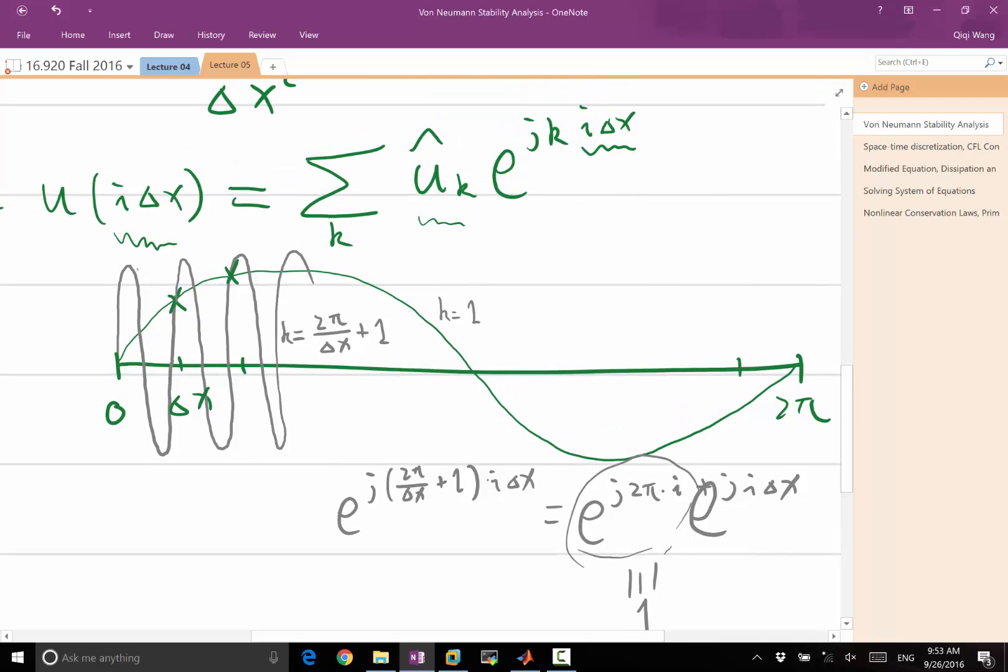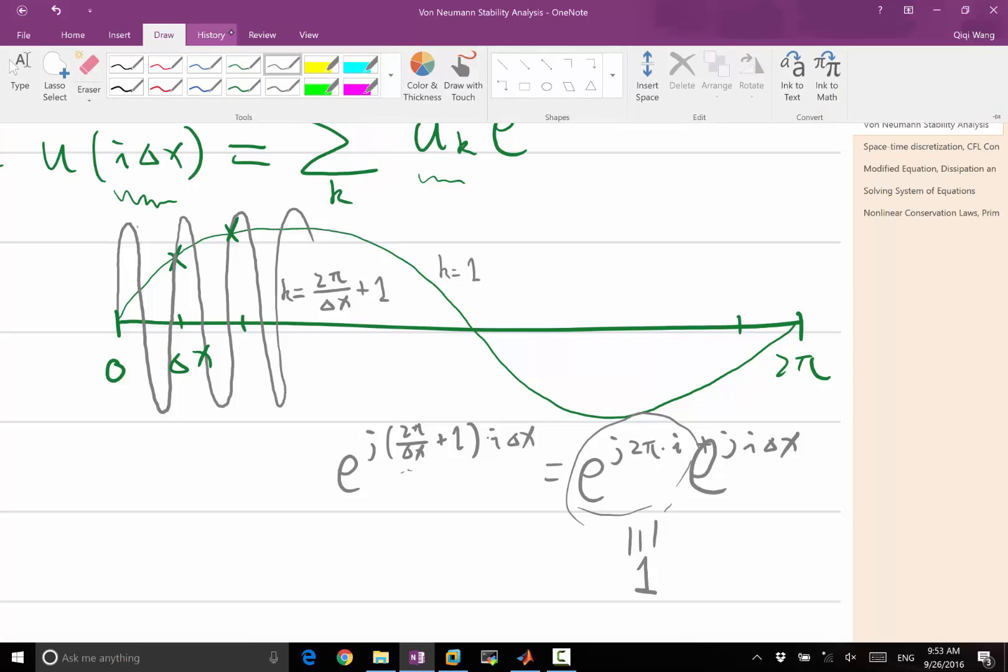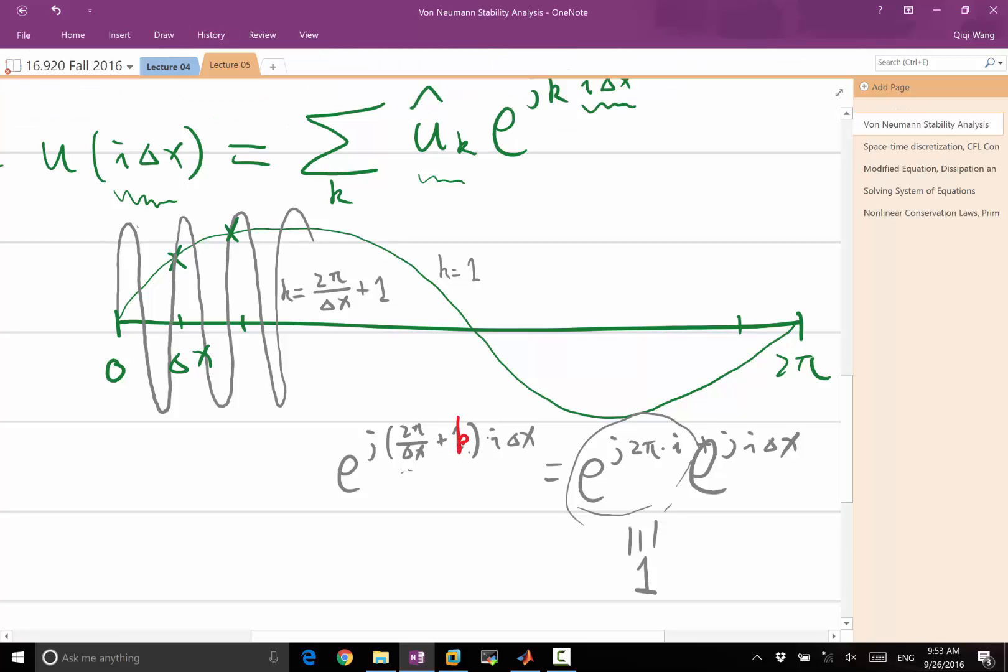So that means when I shift the frequency, and this happens for any k. If I replace the one by k, this is ki delta x, this is going to be exactly the same. So if I shift the frequency by 2 pi over delta x, or 4 pi over delta x, or 6 pi over delta x, I have exactly the same values at the grid points.